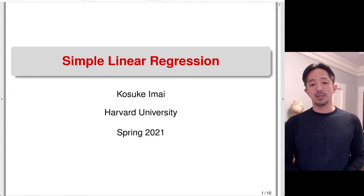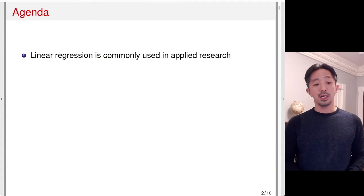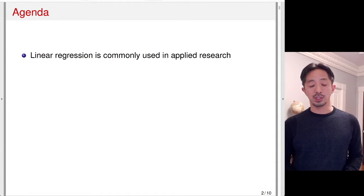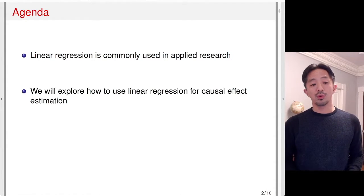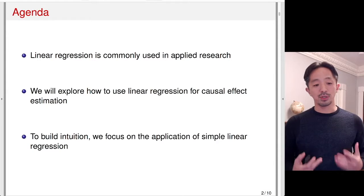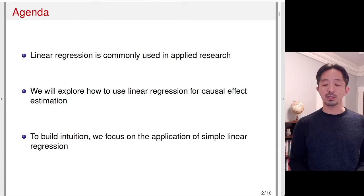In this lecture, we'll discuss simple linear regression and its relationship with causal inference. Linear regression is commonly used in applied research and is one of the most frequently used statistical methods. We'll explore how to use linear regression for causal effect estimation. In particular, to build intuition, we're going to focus on the application of simple linear regression, which has only one predictor.